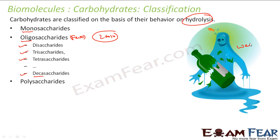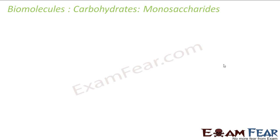Water is the agent of hydrolysis — this powerful water which can break the carbohydrates. Based on the action of water, we classify carbohydrates as monosaccharides, oligosaccharides, and polysaccharides. Let's start with monosaccharides.